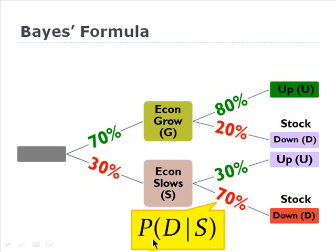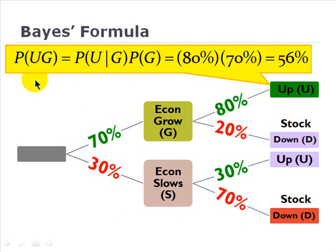Similarly, this is also a conditional probability, the probability that the stock goes down given that conditional on the economy slows. In that case, 70 percent.